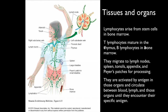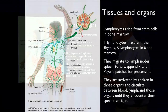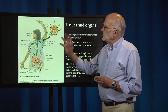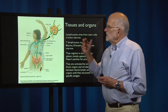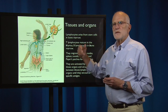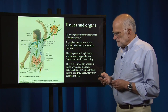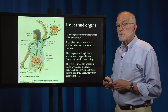Lymphocytes are activated by antigen in these organs, and they circulate between blood, lymph, and those other organs until they encounter their specific antigen. They are continually circulating through the body — they're on patrol.